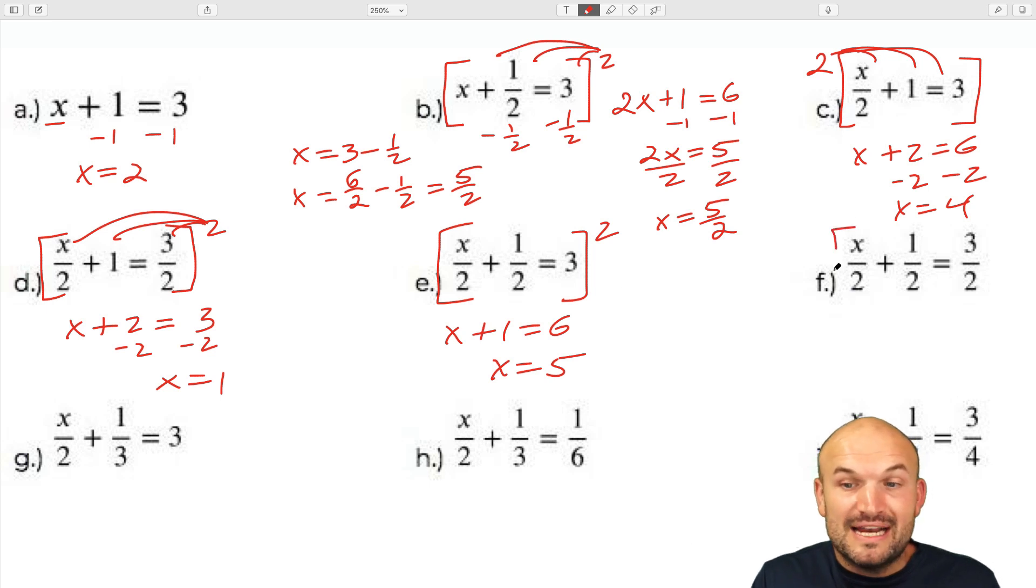You can see that I'm not even having to show all my work. Now this next one is great because you can see that all the denominators are equal to 2. And anytime all your denominators are the same, you can actually just eliminate it. Because again, what would happen if you multiplied all of these by 2? You would just have the equation x plus 1 equals 3, and therefore x would equal 2.